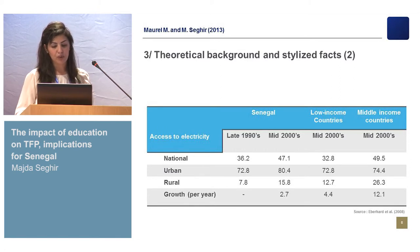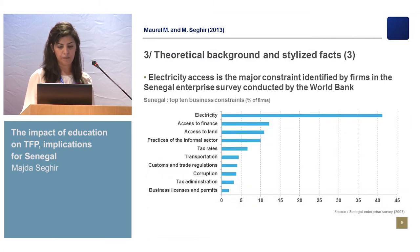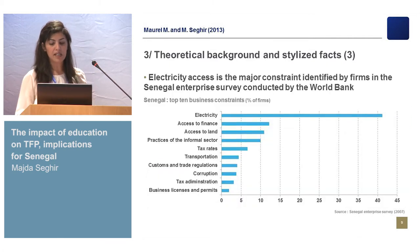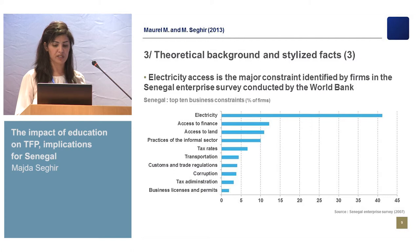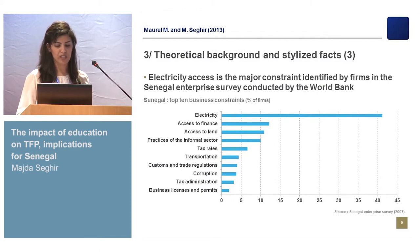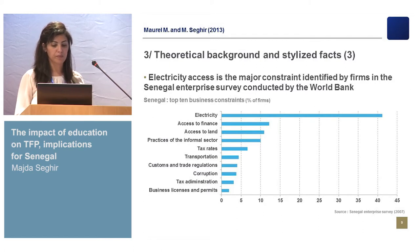Moreover, a recent firm study highlights electricity access as the major problem identified by firms. About 58% state it is a major problem, and 85% of firms state they had a power shortage during the last month. Each power shortage lasts around eight hours, which represents a significant waste of time and productive activity for the firms.